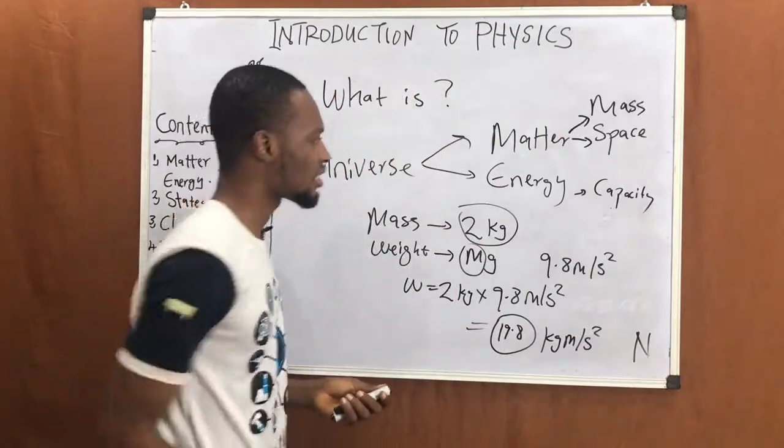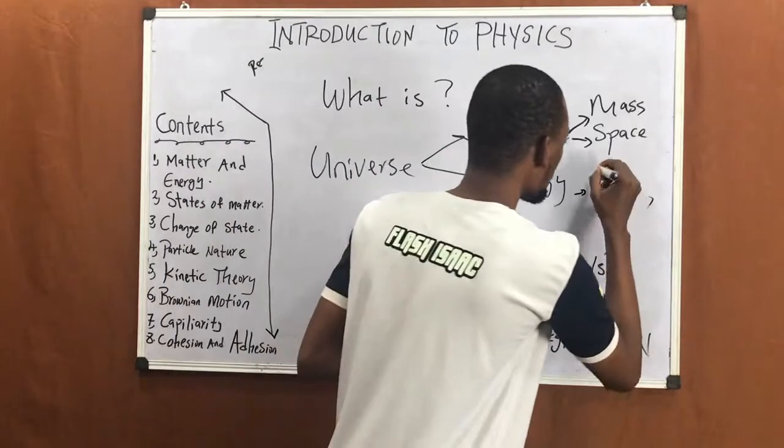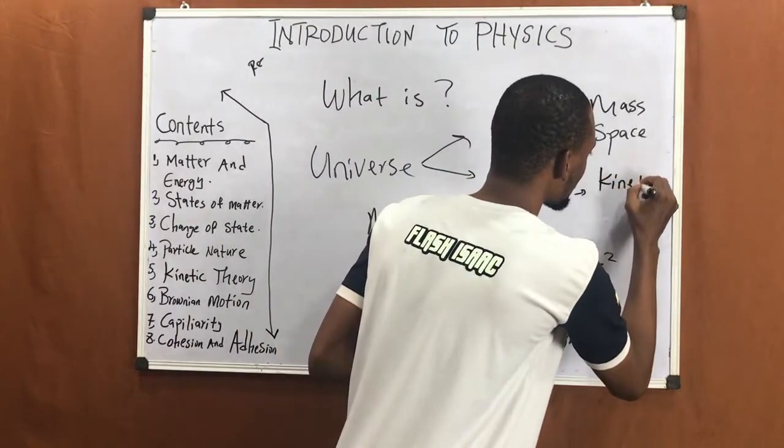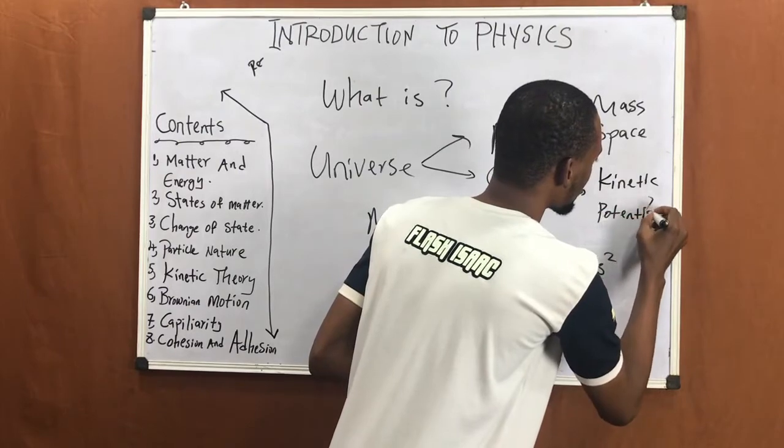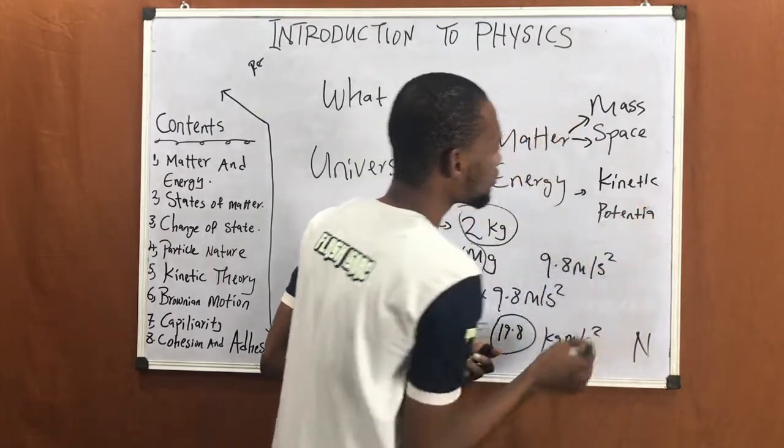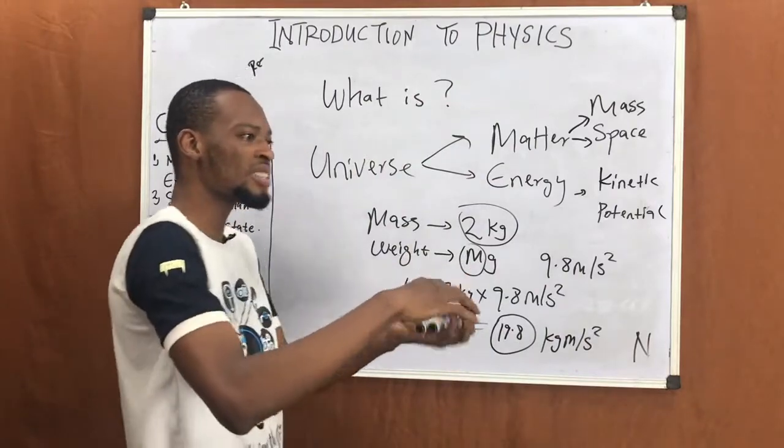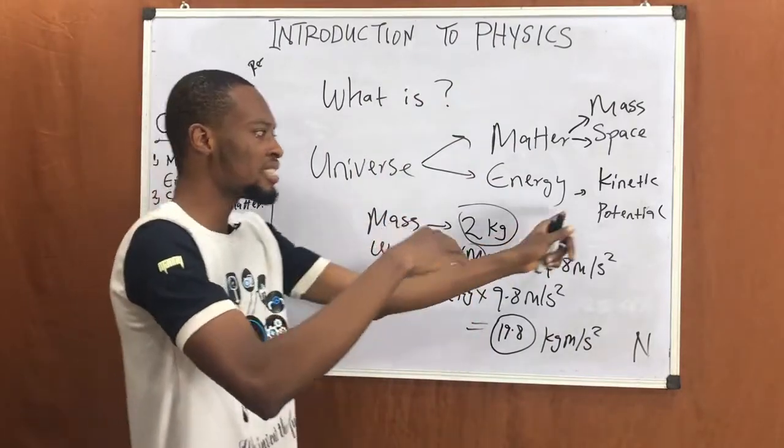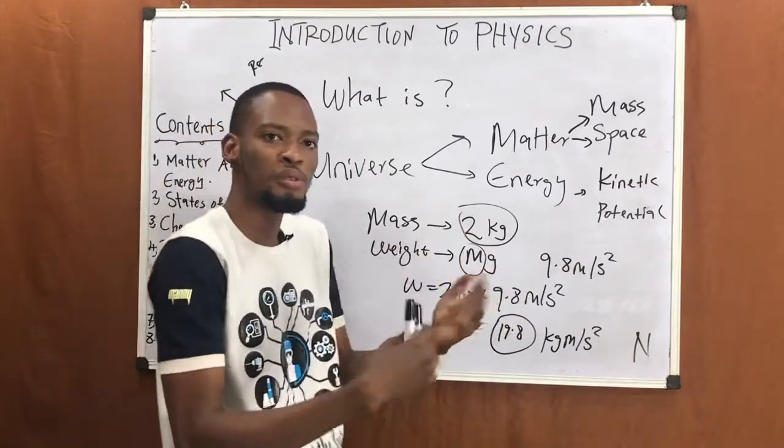We have two types of energy: we have kinetic energy and potential energy. Potential energy is the energy a body possesses due to the position or the height. Kinetic energy is the energy a body possesses due to motion, due to work.